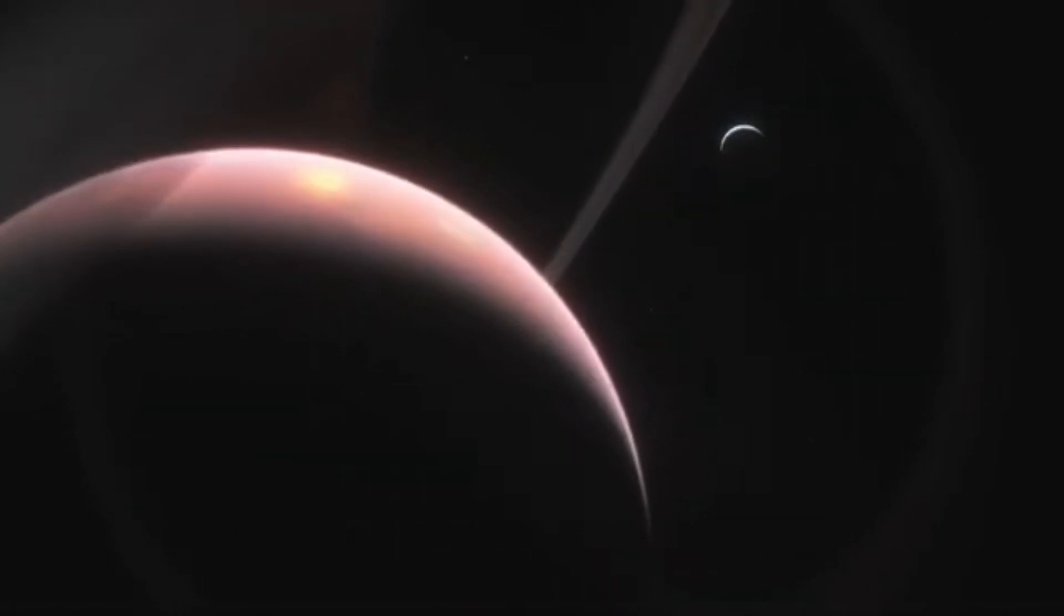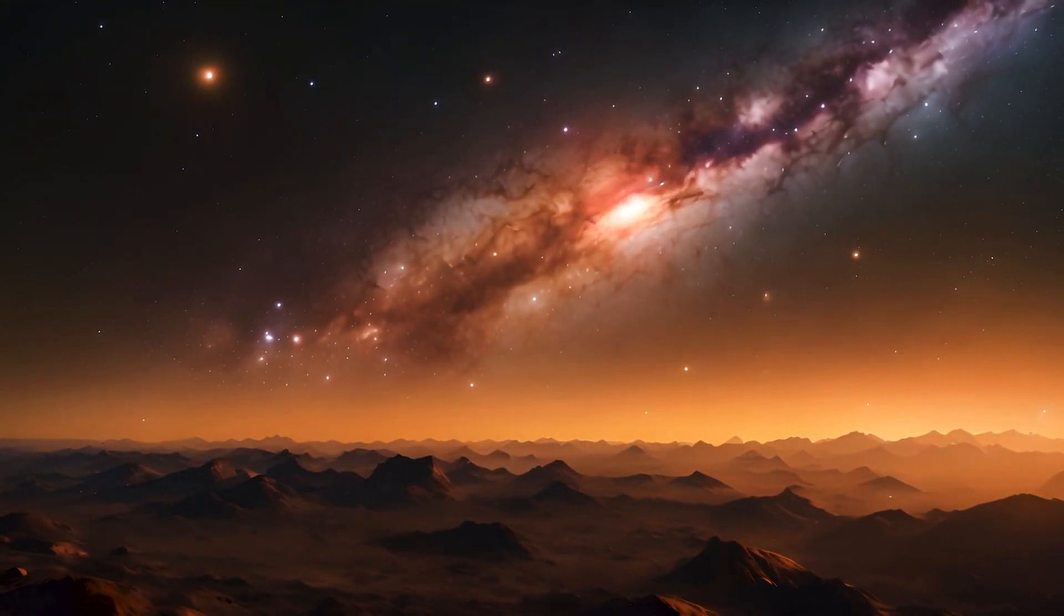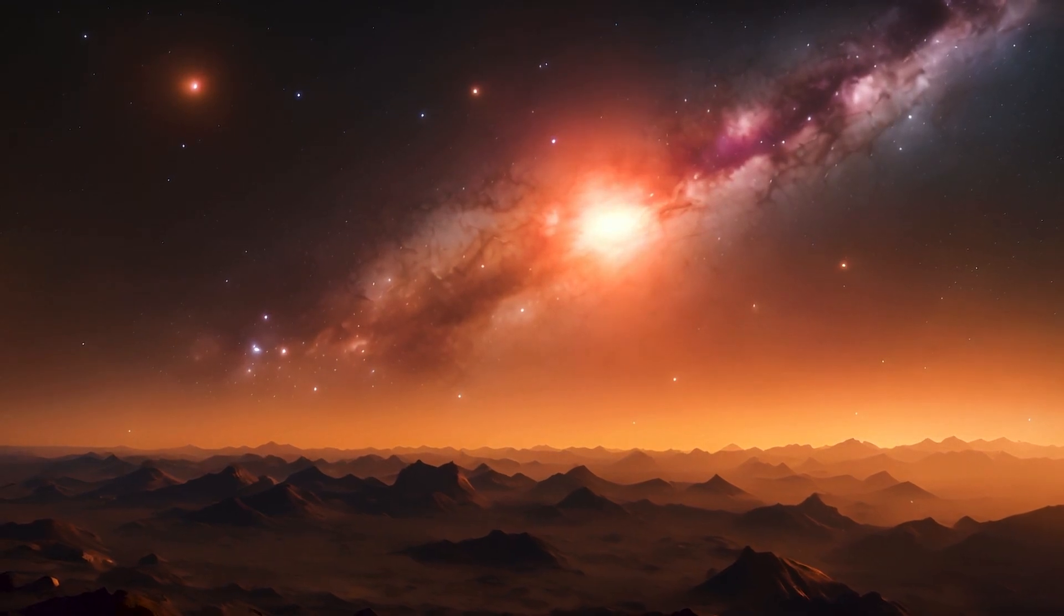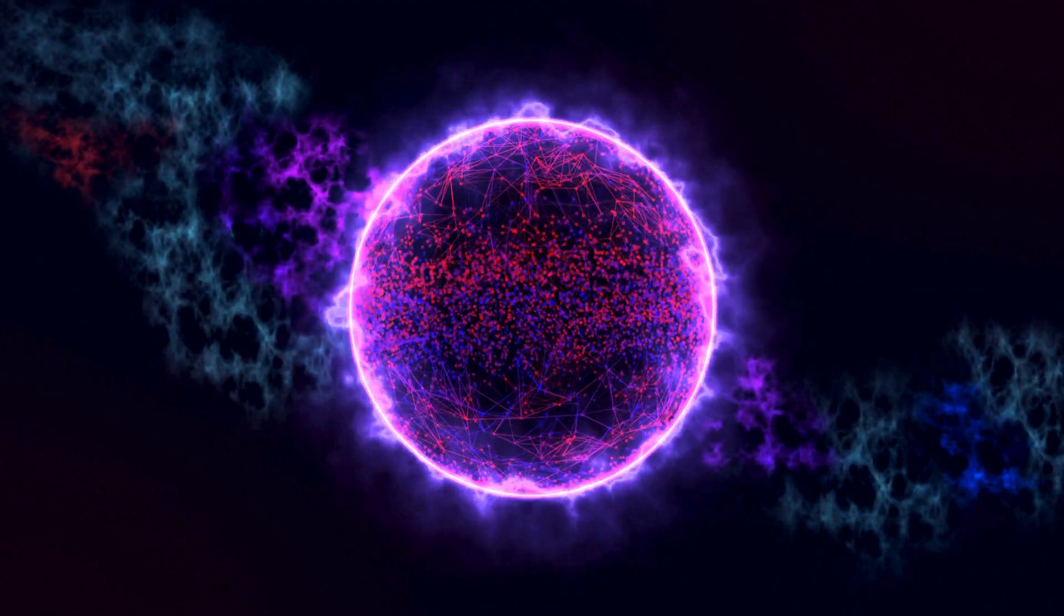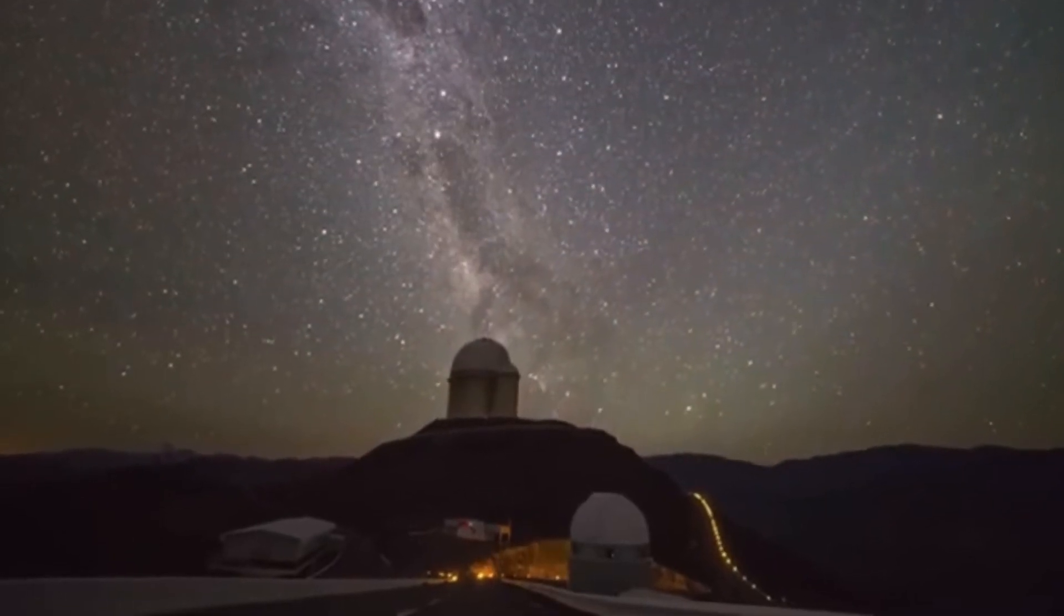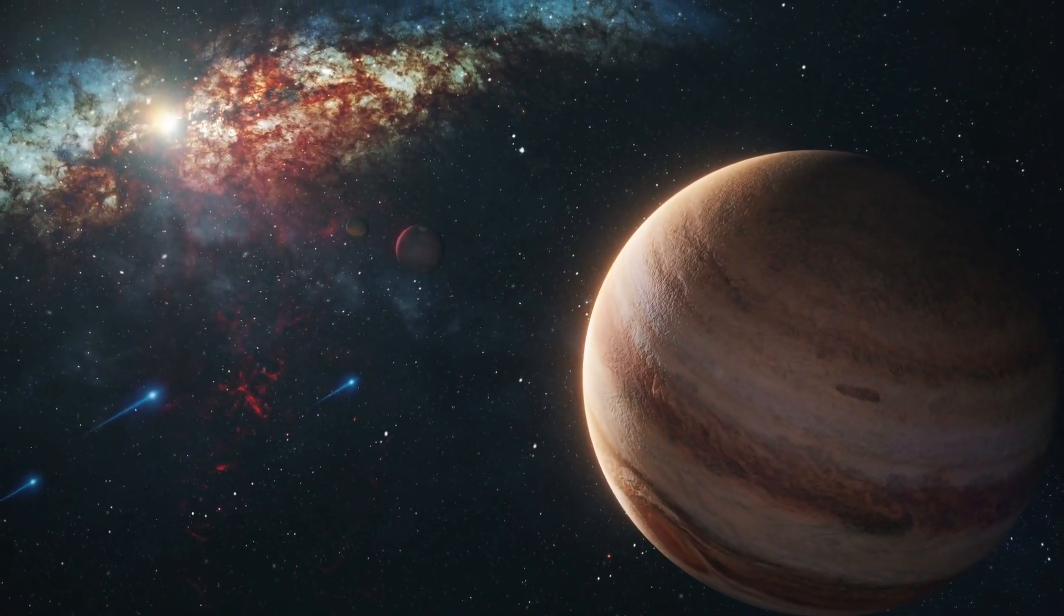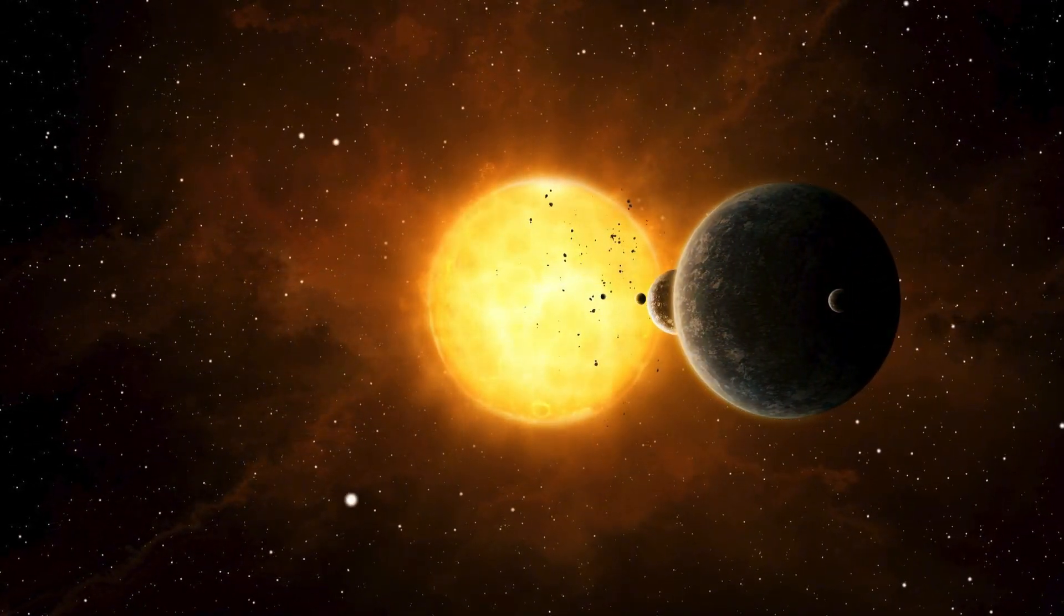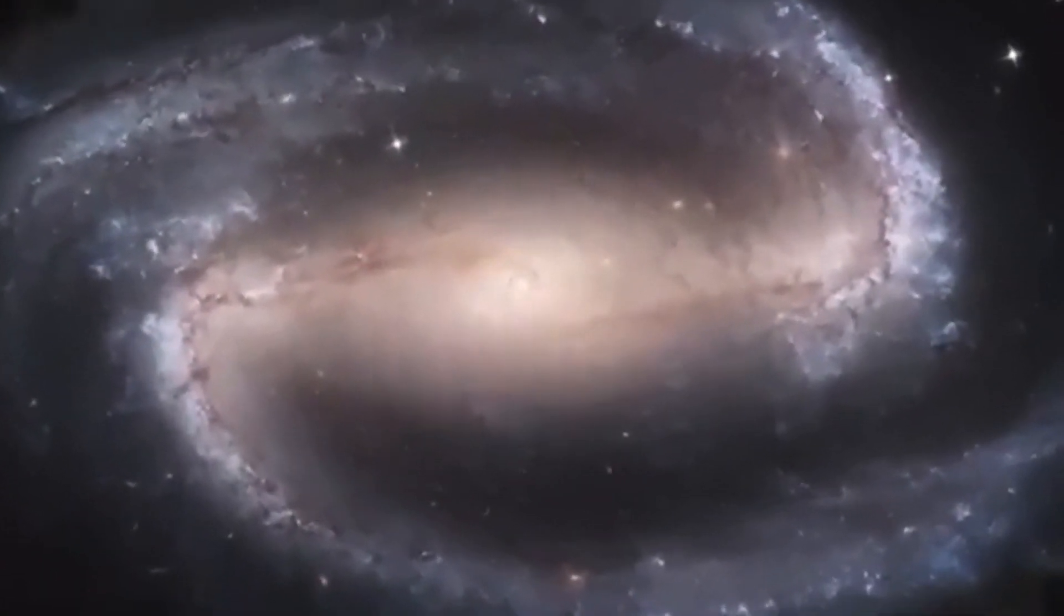Enter the James Webb Space Telescope. Thanks to its powerful infrared capabilities and advanced techniques like coronagraphy, where a special mask is used to block out the light from a star, the JWST has finally been able to capture an image of Proxima b that is far clearer than anything we've seen before. This quantum breakthrough represents a leap in our ability to study exoplanets. For the first time, scientists have been able to directly observe Proxima b in incredible detail.